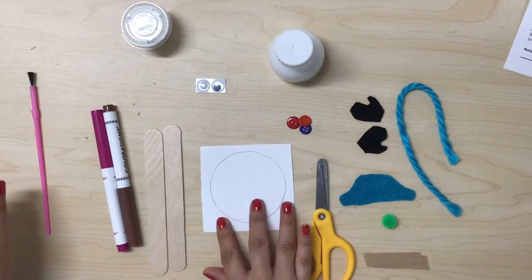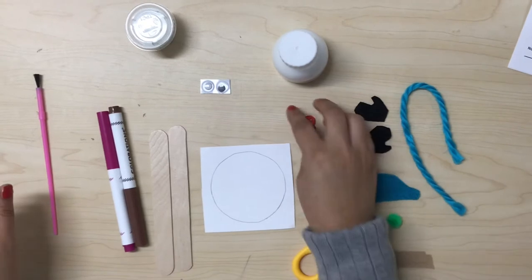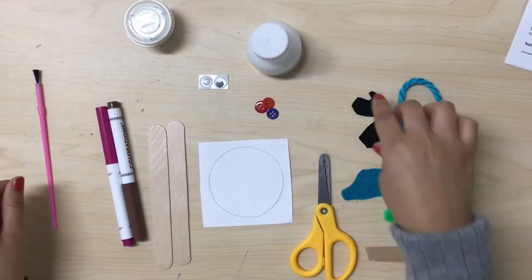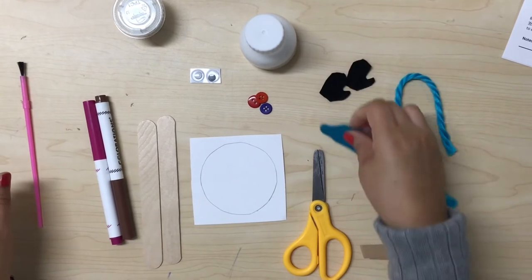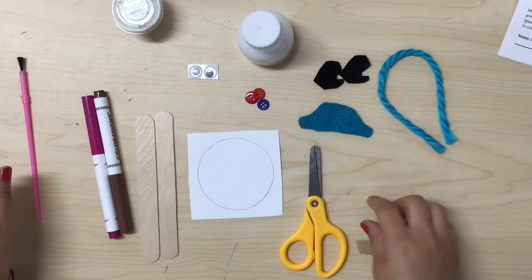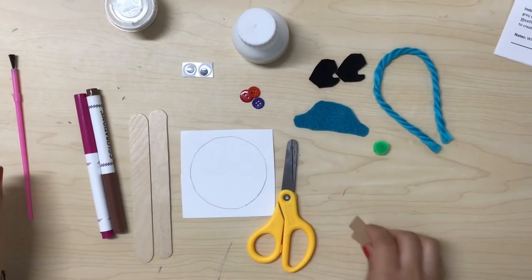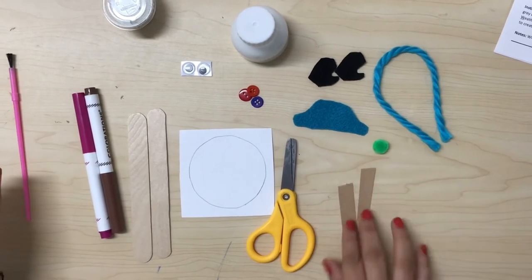construction paper, circle template, buttons, glue, mittens made of felt and a hat, yarn, pom-poms, scissors, and two brown strips. First,